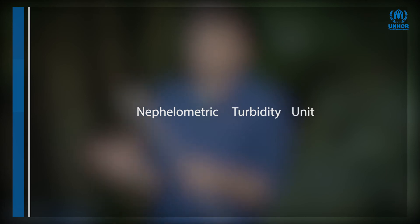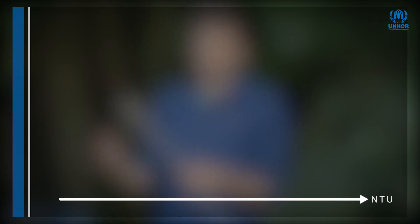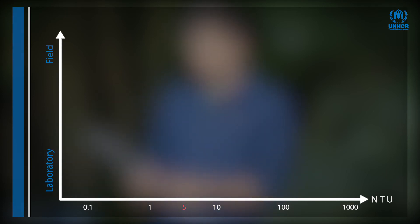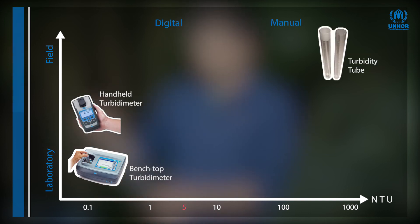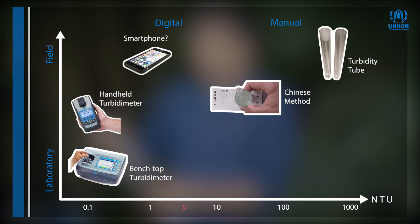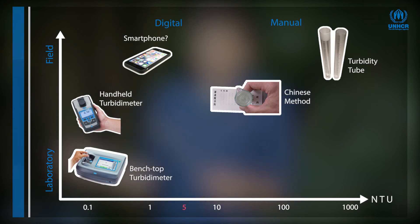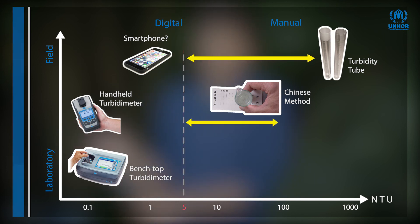Various units are used to express the degree of turbidity, however the most common is Nephelometric Turbidity Units, or NTU for short. Turbidity can be measured in many ways — depending on the purpose, it may be measured with digital meters with high precision or through manual measurement with lower precision. There are even smartphone applications, although this technology is relatively new and untested. For low-resource settings, manual measurements are most common, giving accuracy down to five NTUs. For greater precision, digital turbidity meters are needed.